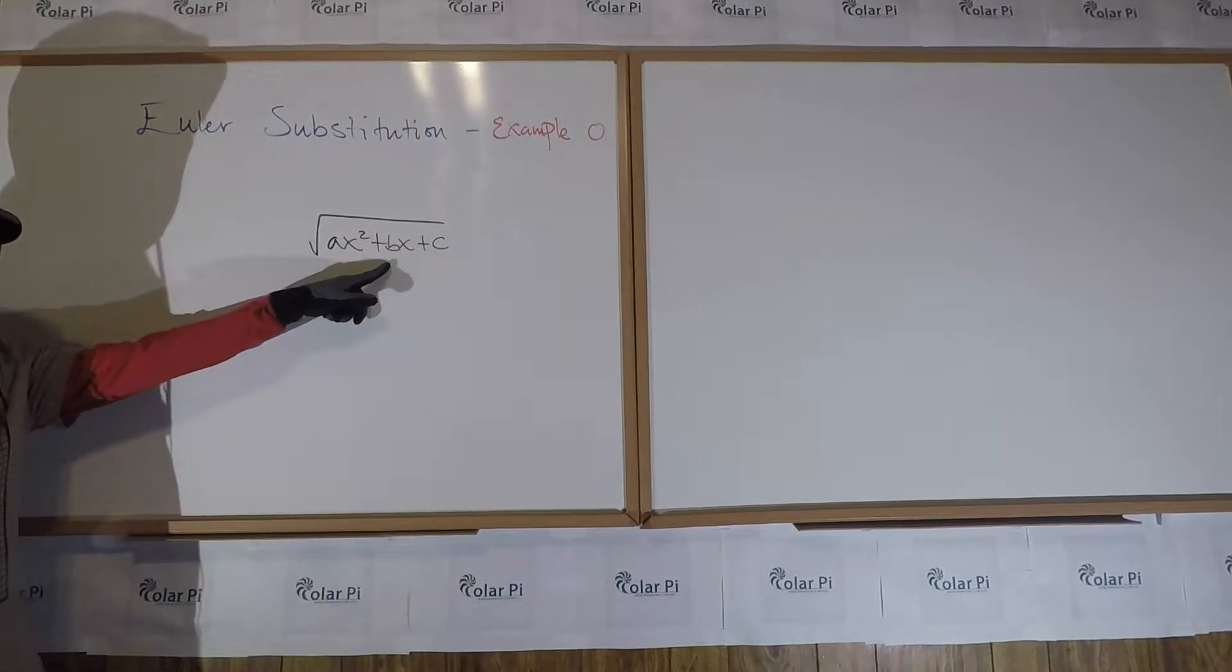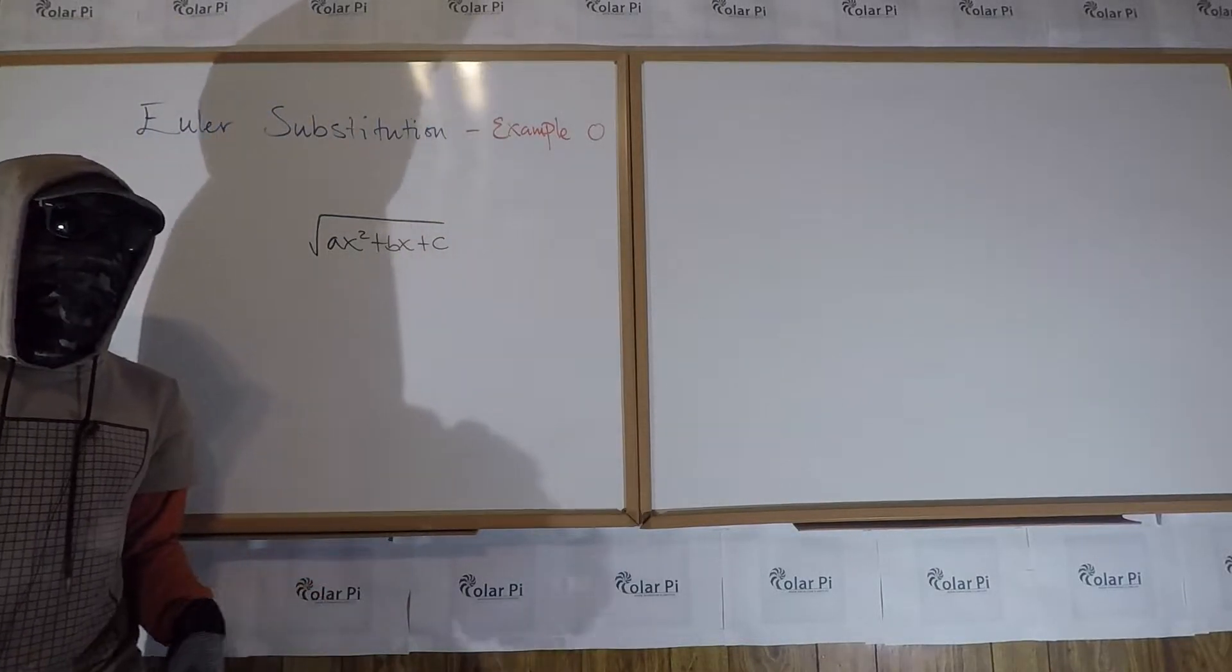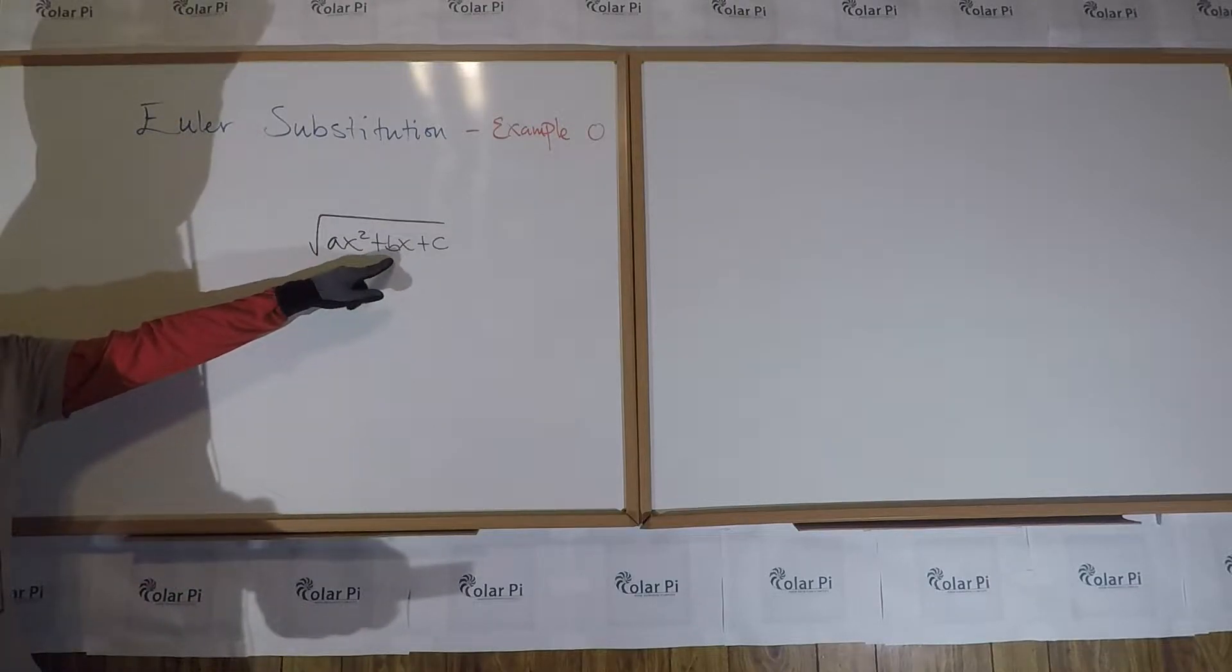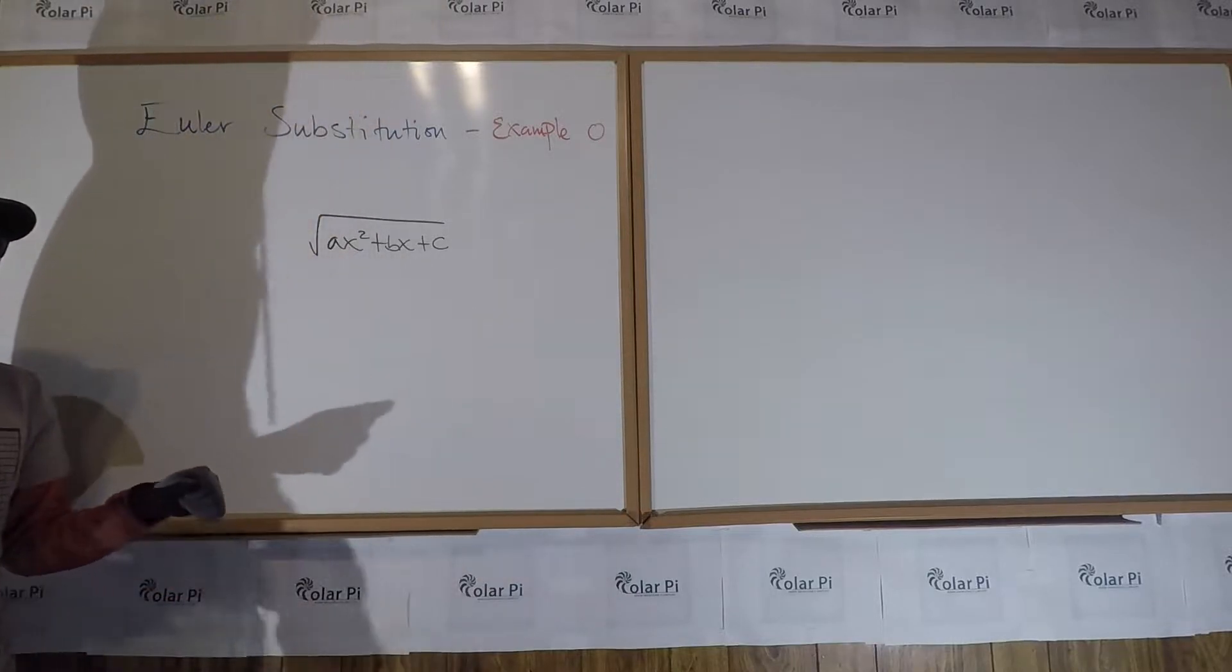First thing first, if b is equal to zero, then you use trig substitution, trigonometric substitutions, right? And I have many videos on those. But assuming that b is not equal to zero, then we use one of three Euler substitutions.